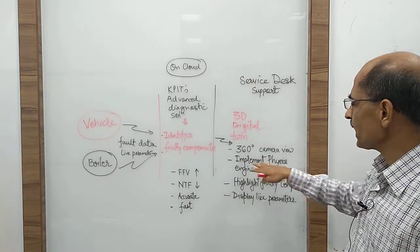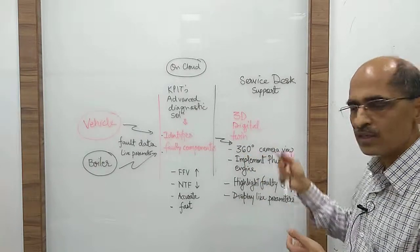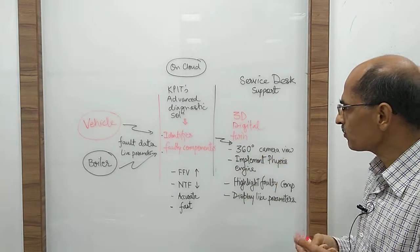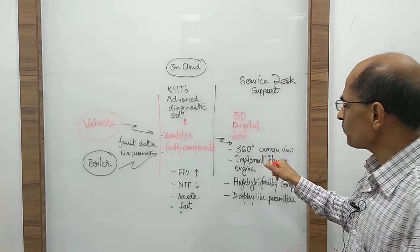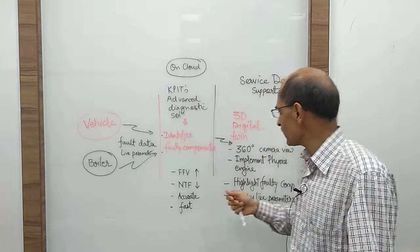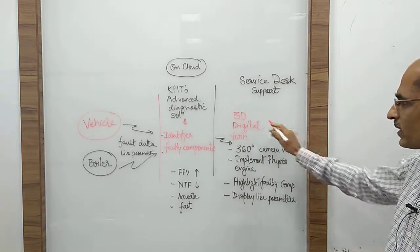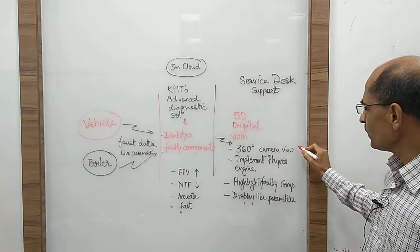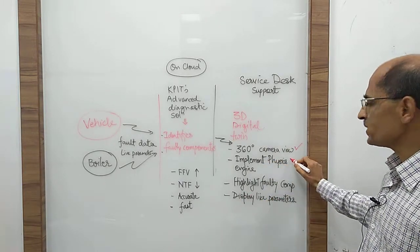...where a support desk technician can really see a 360-degree camera view of that particular component or vehicle. So the first milestone for this challenge is to build a 360-degree camera view. KPIT would provide a 3D model to you, and then you implement a 360-degree camera view and then implement a physics engine on it. So this is your milestone 1.